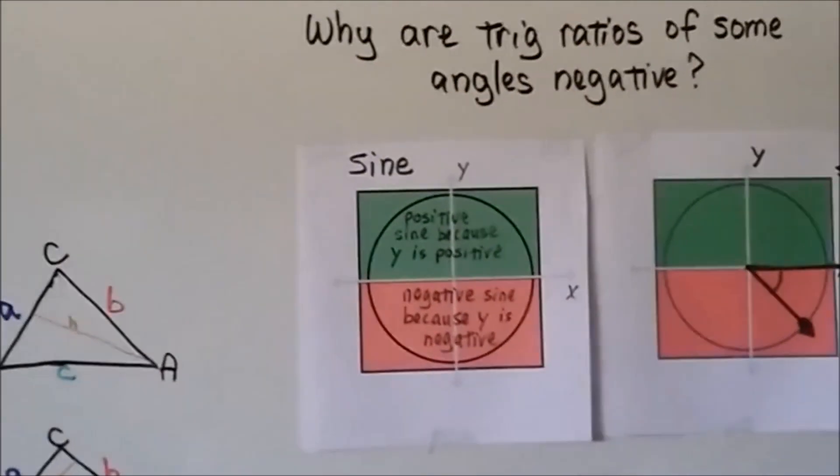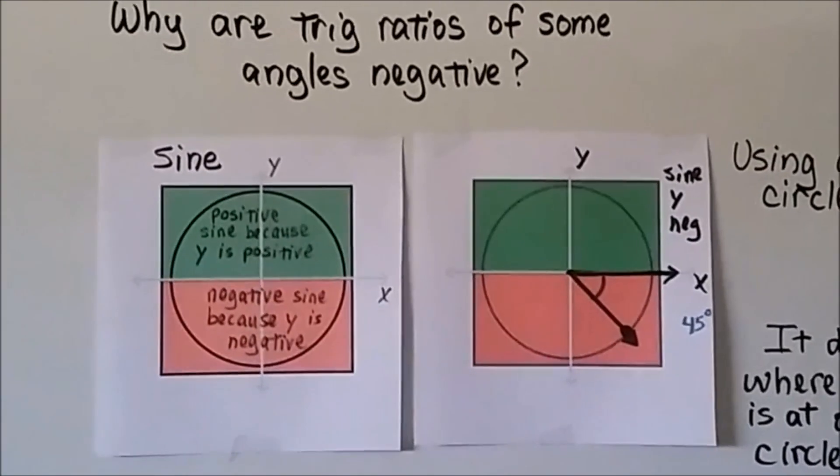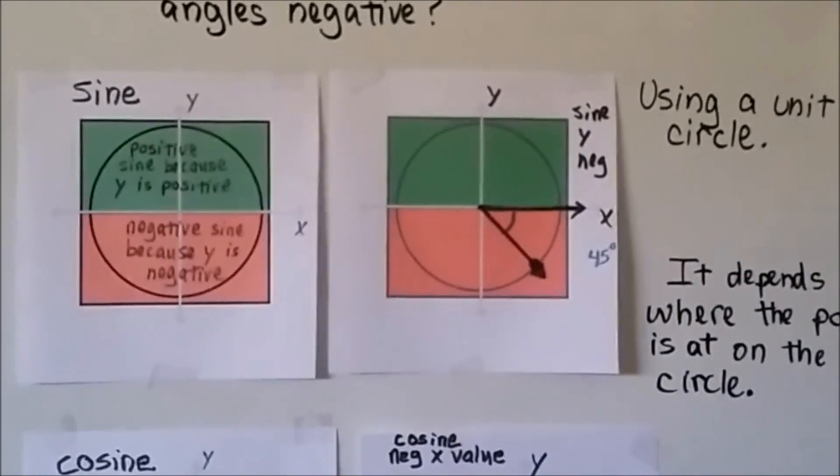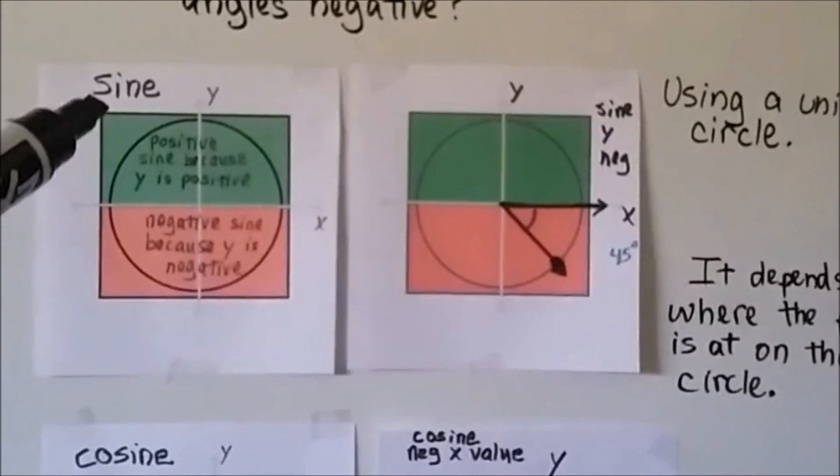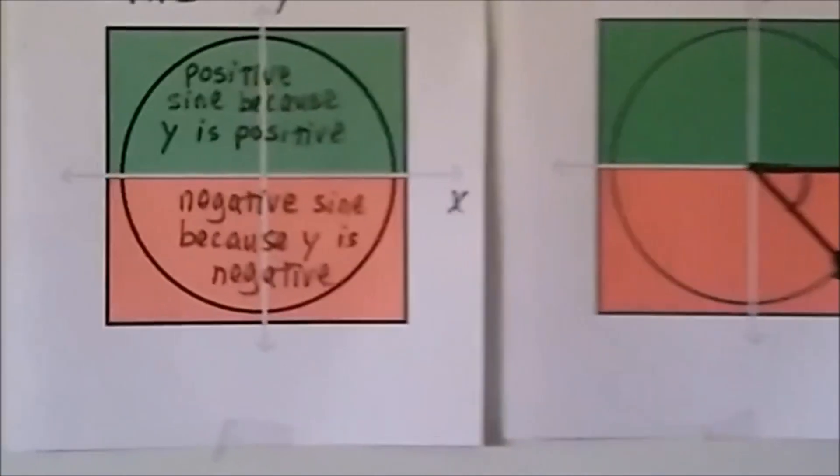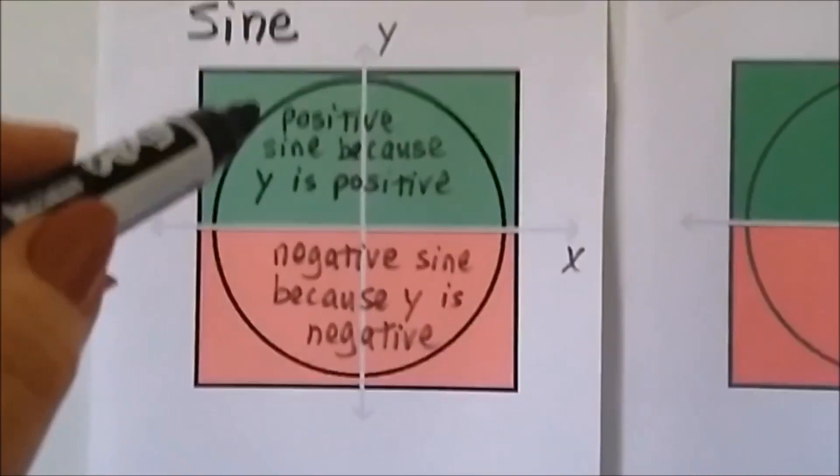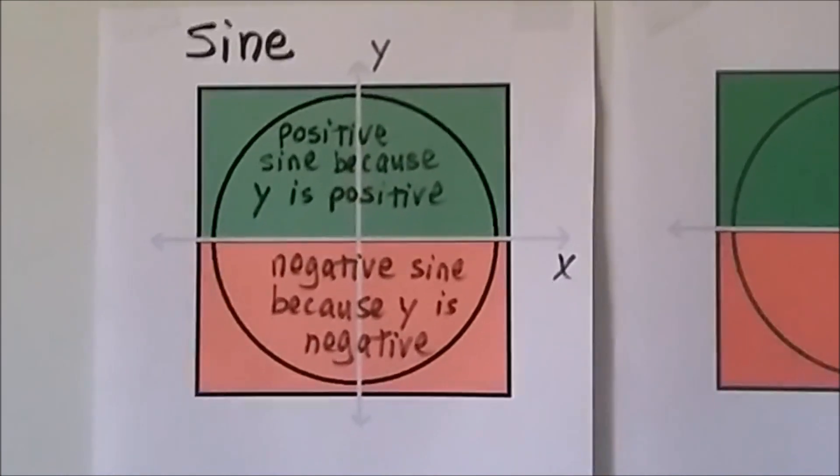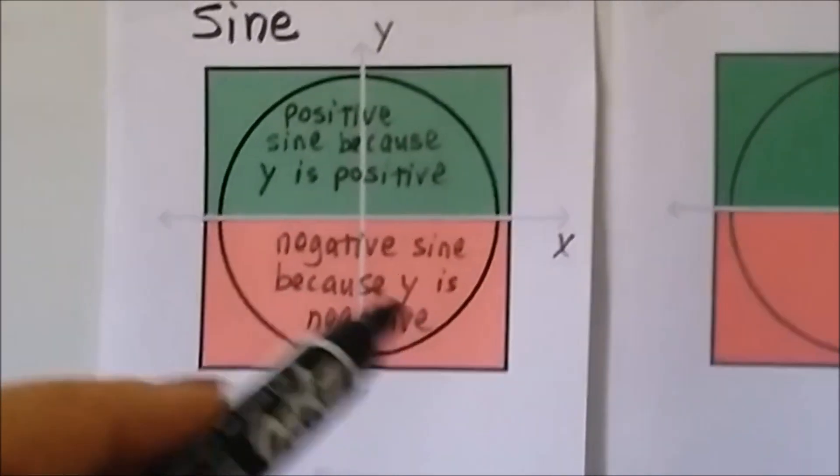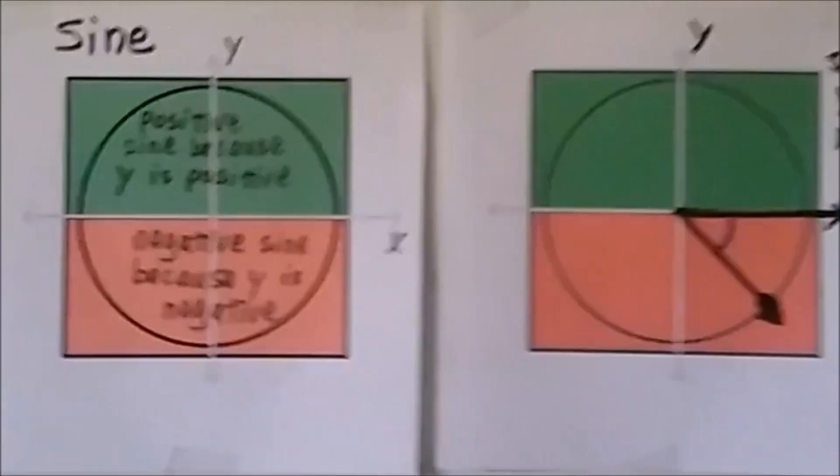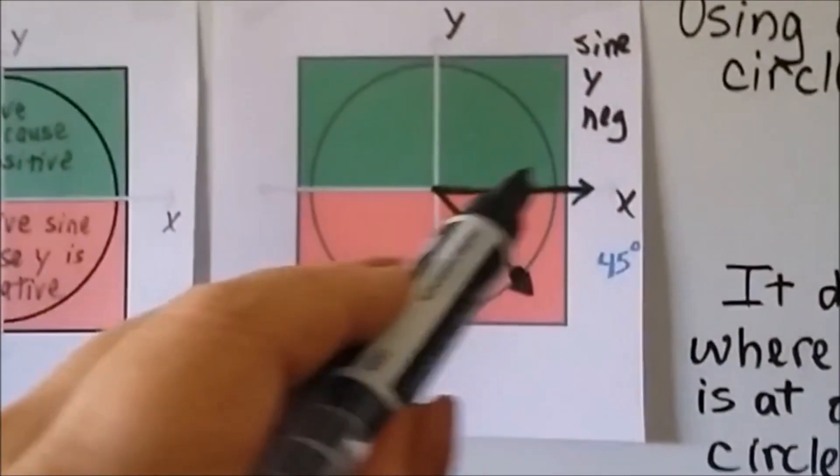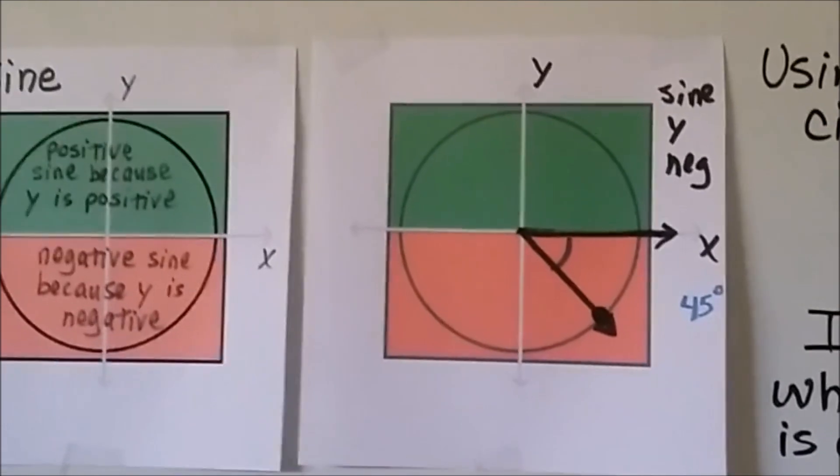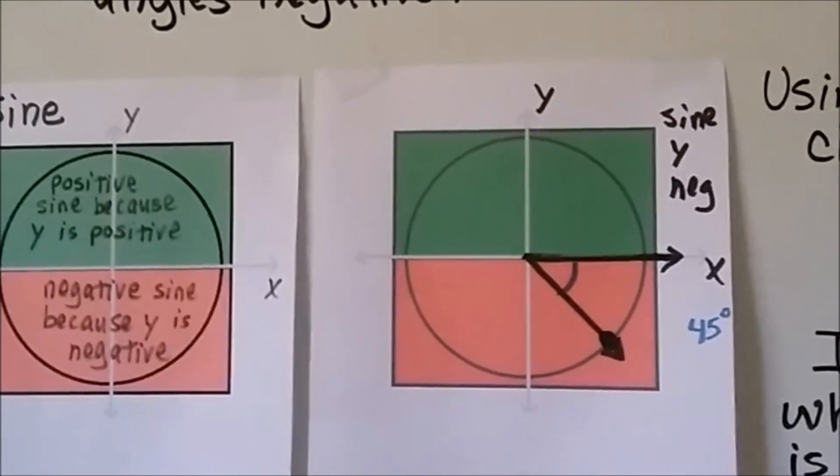Some of you might ask, why are trig ratios of some angles negative? I don't want to get too deep into trigonometry because we've only got a couple more videos, and this is geometry. When you look at a unit circle, if the point of the angle is up here for sine, it's going to be a positive sine because the Y is positive, and it'll be negative sine here because the Y is negative. For this angle right here, it's coming like this, and then down here, and the point is right here, it's in the negative. That's why a trig ratio of an angle would be negative.